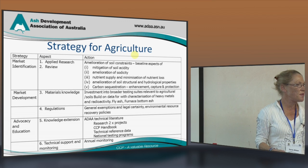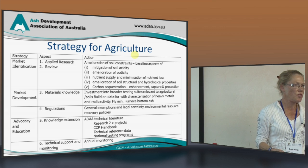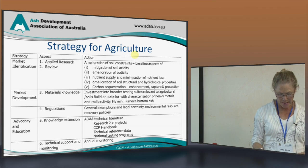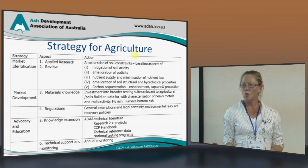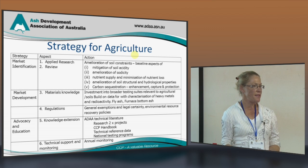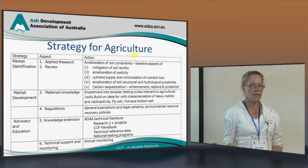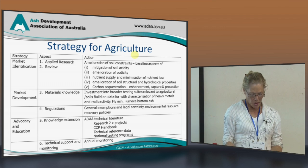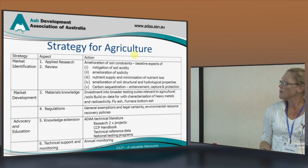In total, if these constraints were solved, they would add $3 billion each year to the Australian agricultural production sector. However, in 2012, the ADA membership identified that we only allocated 600 tonnes of ash for agriculture, despite the strong research that we have.